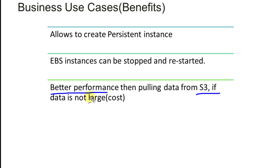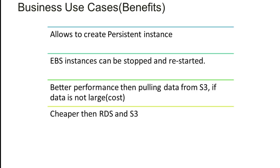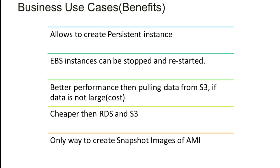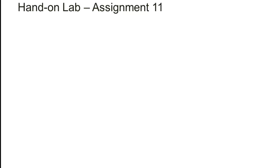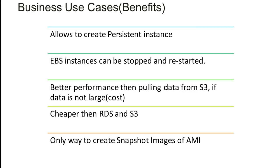EBS uses an internal protocol that is much better than the HTTP protocol used to access S3 over the internet. It is also cheaper than RDS and S3, which is why many people use Elastic Block Service. Additionally, snapshot images of AMI must always be stored inside an EBS block, because S3 does not support restoring such large images. That completes the overview of the EBS service.